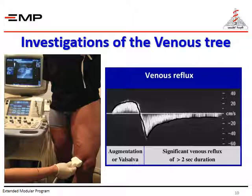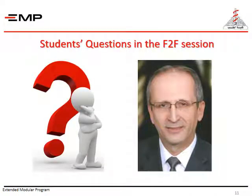In special situations, namely the examination of the inferior vena cava and the intrathoracic veins, duplex images are not accurate. CT and venography can help in these situations. Please be ready with your questions if you have any at the beginning of your next face-to-face session. Thank you.